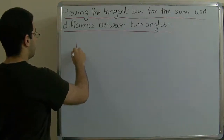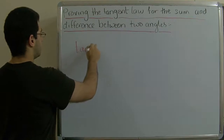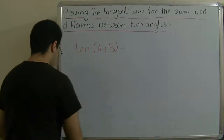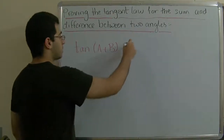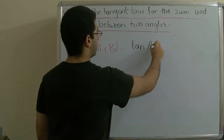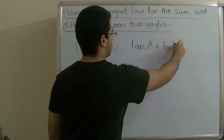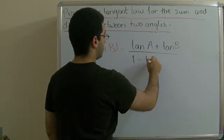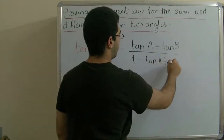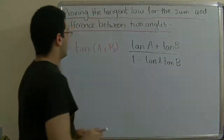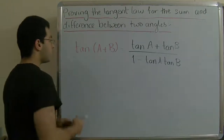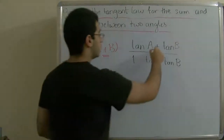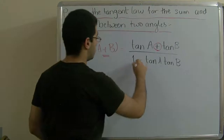If we have tangent of a plus b, this equals tangent of angle a plus tangent of angle b, over one minus tangent of a times tangent of b. We can notice that the sign in the numerator is positive and did not change, while it changed in the denominator.